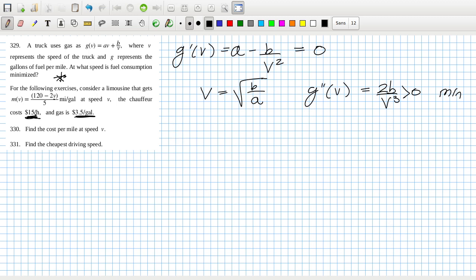Okay, find the cost per mile at speed v. For the following exercise, consider a limousine that gets, oh that's a miles per gallon. Okay, so at speed v, what's the cost per mile? The cost for one mile, basically, at speed v.